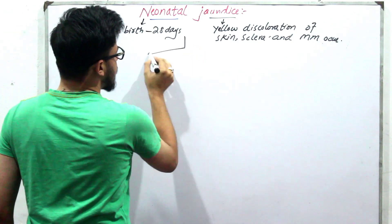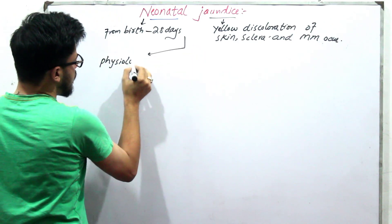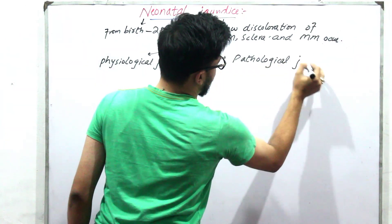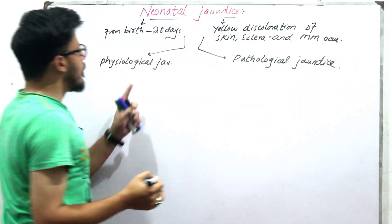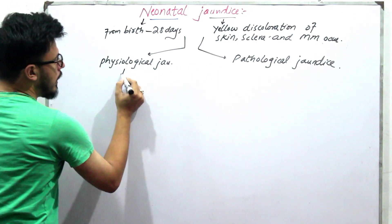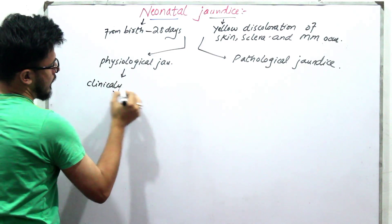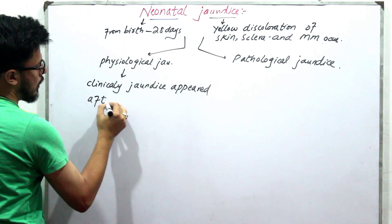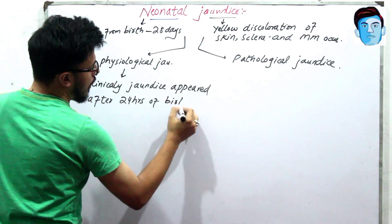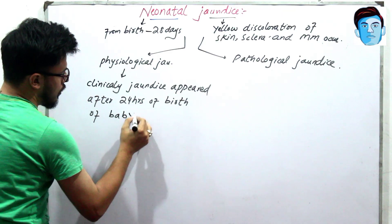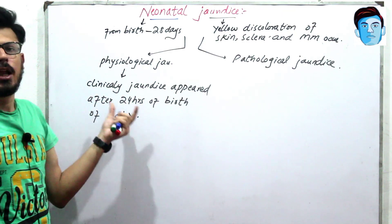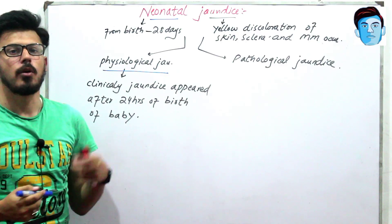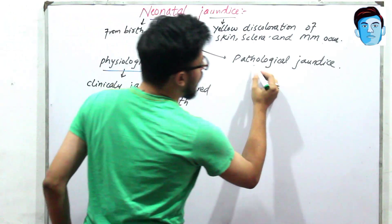There are two types of Neonatal Jaundice: Physiological Jaundice and Pathological Jaundice. In Physiological Jaundice, clinically jaundice appears after 24 hours of birth. I already made a detailed video on Physiological Jaundice — make sure to watch that video first. I will also provide a link in the description. In this video, we will be more dealing with Pathological Jaundice.